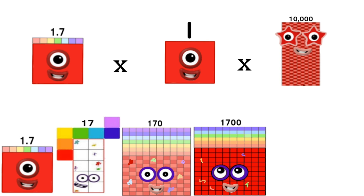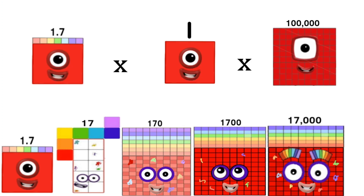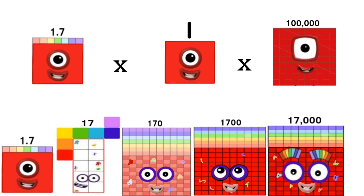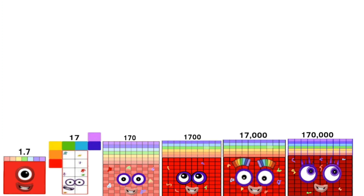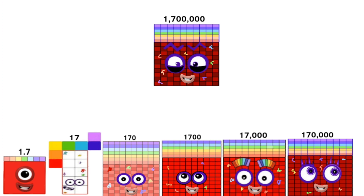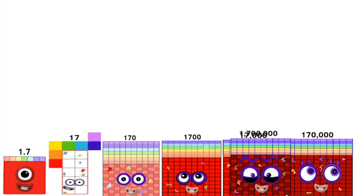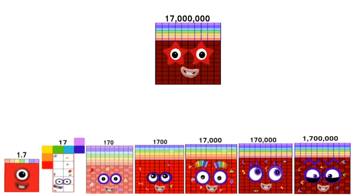1.7 times 1 times 10,000 equals 17,000. 1.7 times 1 times 100,000 equals 170,000. 1.7 times 1 times 1,000,000 equals 1,700,000. 1.7 times 1 times 10,000,000 equals 17,000,000.